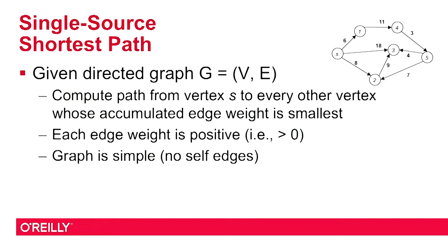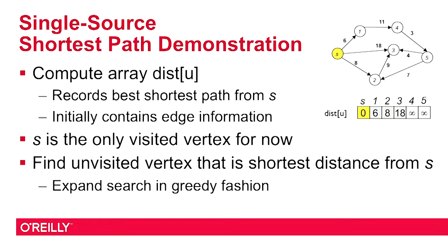To demonstrate the Single Source Shortest Path Algorithm, let's make sure we understand the problem and then we'll be able to look at the code. In this graph, my special designated source is S, and I've got five other vertices. I'm trying to understand how much accumulated cost I will find by making a path, any path, from that source vertex to each of those vertices in turn. We can start with the initial assumption that the shortest path will be the edges that I might have already in the graph.